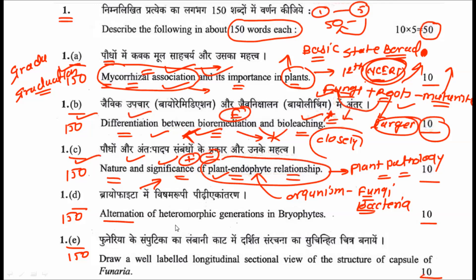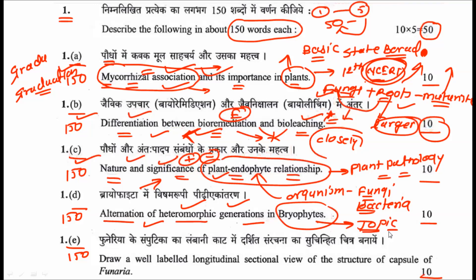The fourth sub-question is about the alternation of heteromorphic generation in bryophytes. You have to describe the alternation of heteromorphic generations in bryophytes. This topic can be found in any graduation-level botany book, as it is a general trend found in bryophytes, and it is explained very elaborately in standard bryophyte references.